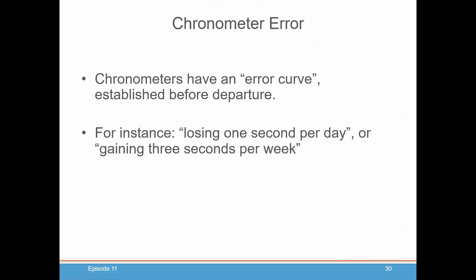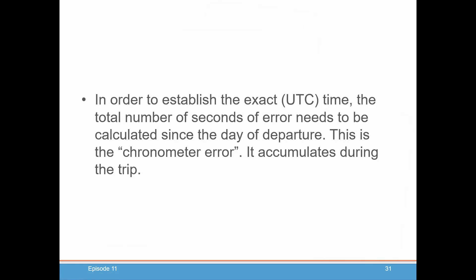Chronometers have either an error curve or some people call it an error rate that you establish before you leave on your voyage. You check your chronometer every day for a couple of weeks and you determine how it gains or loses so many seconds per day or so many seconds per week. And then, therefore, when you see the time on your chronometer, you know how long it's been since you left port and synchronized your chronometer. You adjust the time by either the seconds you've lost or gained. And then you know the exact time it would have been back at port.